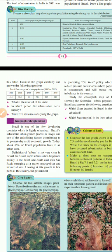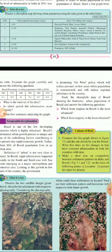The definition of urban is not very clear in Brazil. Rapid urbanization happened mainly in the south and southeast, with São Paulo emerging as a major metropolitan and industrial area. Looking at this growth in a few parts of the country, the government is promoting a 'Go West' policy which will reduce pressure on the few areas where population is concentrated and will reduce regional imbalance.